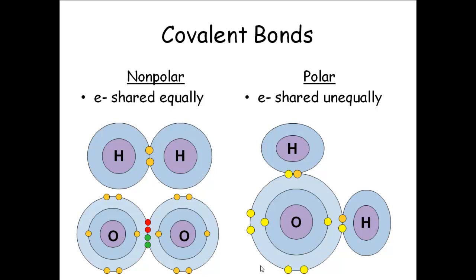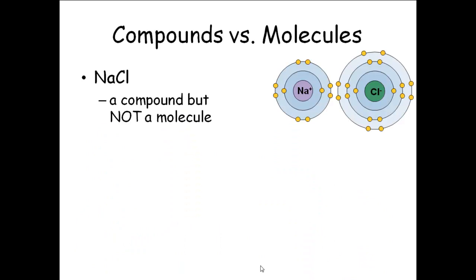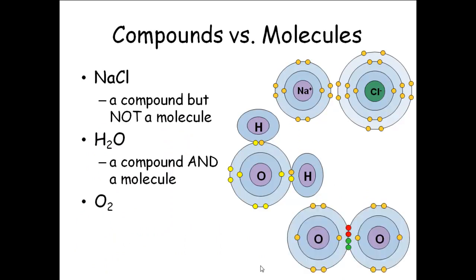Sodium chloride is called a compound but is not a molecule. Water is both a compound and a molecule. Oxygen gas is a molecule but not a compound. A compound is anything made out of at least two different kinds of elements. Oxygen is not a compound — it's just oxygen, nothing else added. Molecules contain covalent bonds; anything with atoms joined by covalent bonds is called a molecule. Sodium chloride's atoms are connected by ionic bonds, so it's a compound but not a molecule.